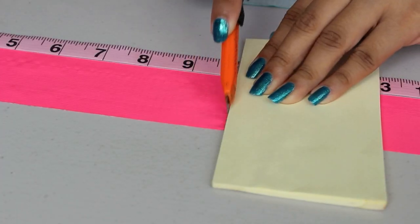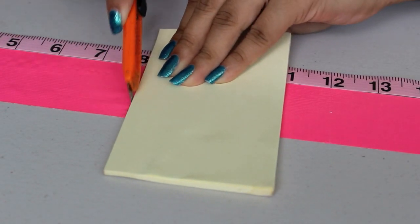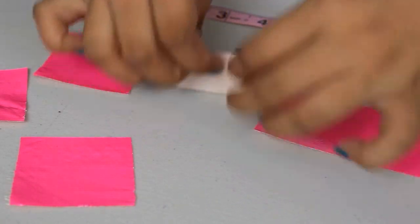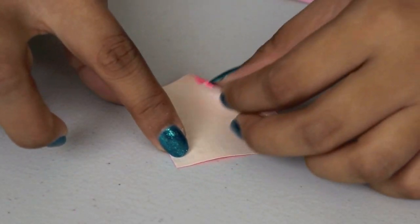For my flower I'm going to make it a medium size and use two colors. For the inside I'm going to need 13 square pieces, and for the outside color I'm going to need 15 square pieces.